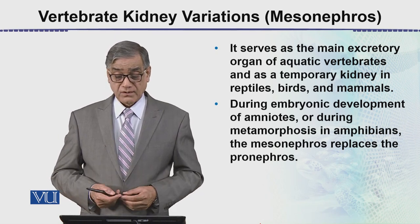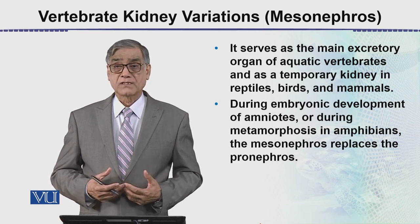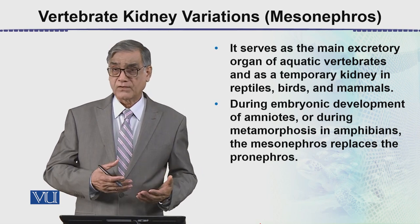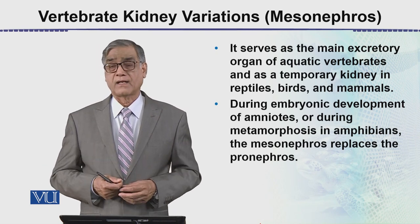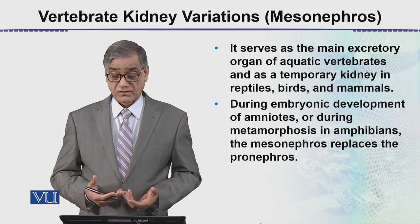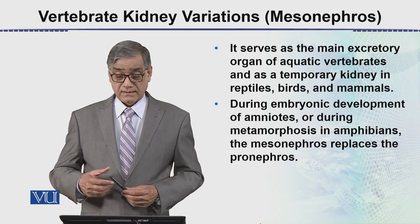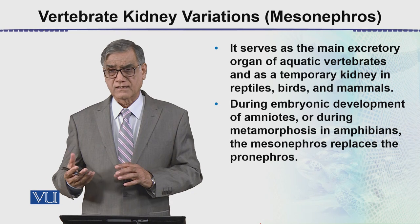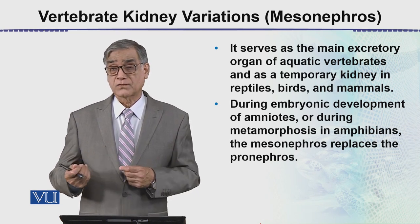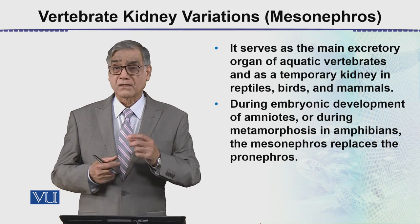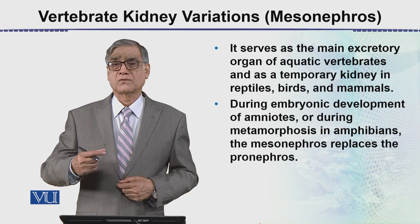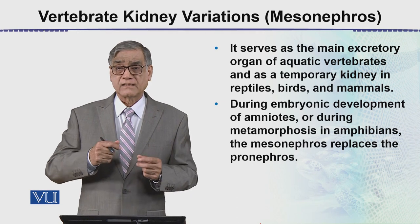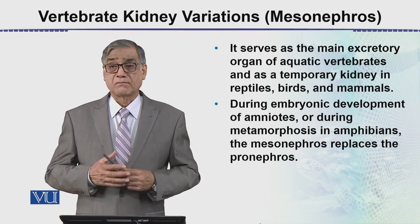During embryonic development of amniotes, or during metamorphosis in amphibians, the metanephros replaces the pronephros. First there is pronephros, then it is replaced by the mesonephros. In amphibians, during metamorphosis — when a tadpole metamorphoses into a froglet and the tail is absorbed — the kidneys also change, so the pronephros, the early form of kidney, changes into the mesonephros.